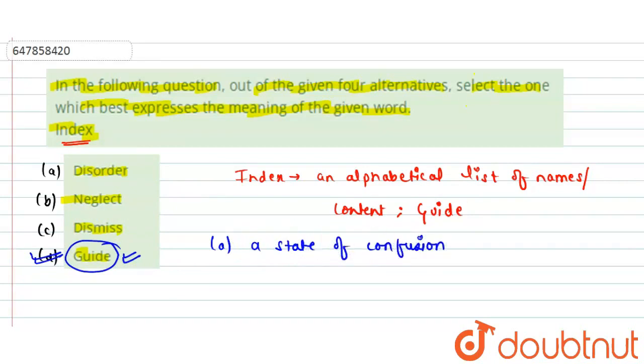Next we have option B, that is neglect. Neglect means fail to care properly.